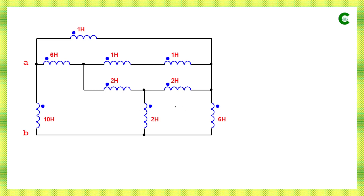This is a delta connection. Similarly, here we have a star connection between three inductors where this is the neutral point. In a star connection we have four points: the neutral point, and between the neutral point and each of the three outer points one inductor is connected. That is how to identify star and delta connections for resistors, inductors or capacitors. We also have another delta connection here, so we need to analyze which conversion will give us more benefit.